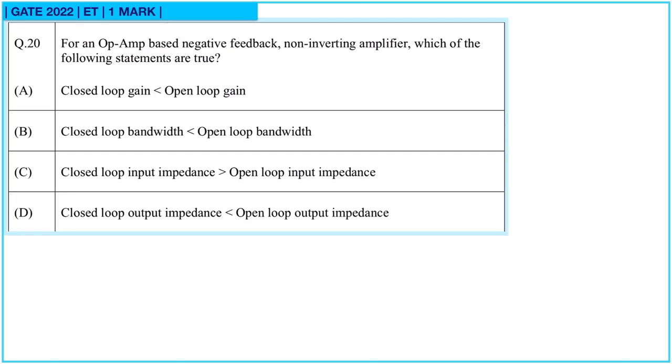Question 20. For an op-amp based negative feedback non-inverting amplifier, which of the following statements are true? First, closed-loop gain is less than open-loop gain. As we know, closed-loop gain is equal to A upon 1 plus A beta, where this beta is our feedback factor. This gives us that AF is less than A, where A is open-loop gain. So this one is correct.